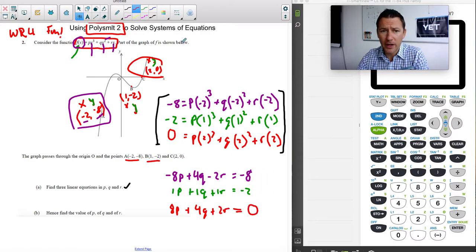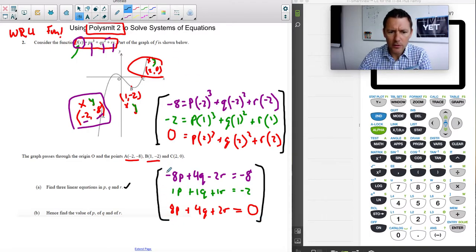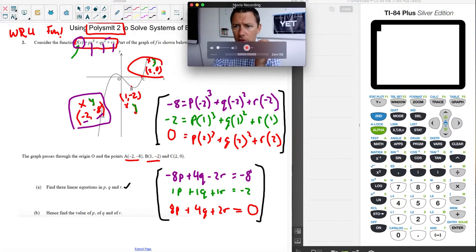You can totally solve this by crunching two of these together, solving for R and like isolating one of these. So you only have two variables and plugging them into one of them. And then you can do this by hand. It's just super slow. And on a calculator paper, speed is an issue. So what we're going to do is take this and use polysmlt to solve the system of three equations and three unknowns. So let's look at how that works.